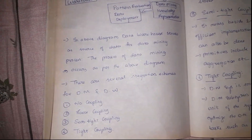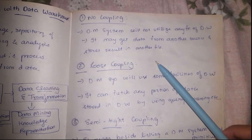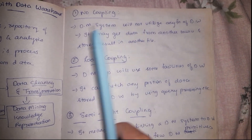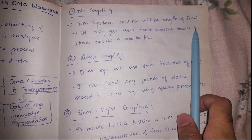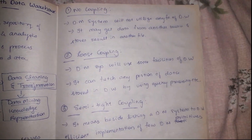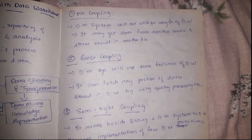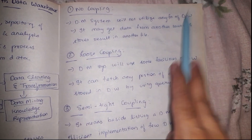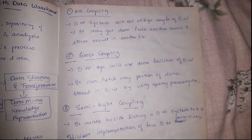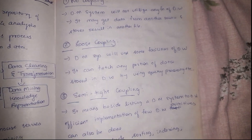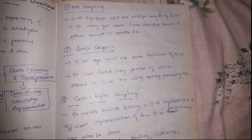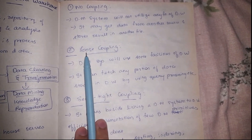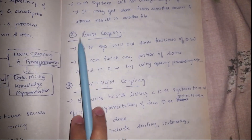The first mechanism is no coupling. In no coupling, the data mining system and data warehouse are not connected to each other, which means the data mining system will not utilize any functionalities of the data warehouse. It can get data from any other source.